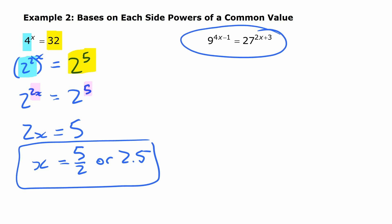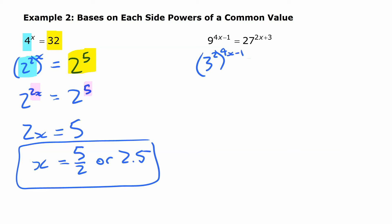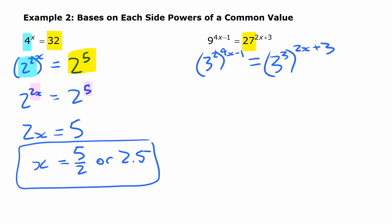Similarly, we have 9 and 27. Again, 27 is not a power of 9, but they're both powers of 3. So we write 9 as 3 to the power of 2 and keep the exponent 4x minus 1. On the other side, we write 27 as 3 to the power of 3 and keep the rest of the exponent, 2x plus 3. All we did is replace 27 with 3 to the 3 and replace 9 with 3 to the 2, keeping everything else the same.